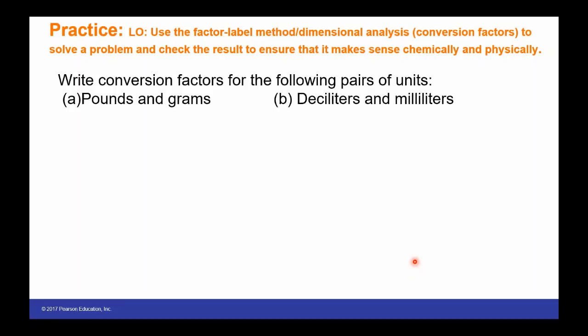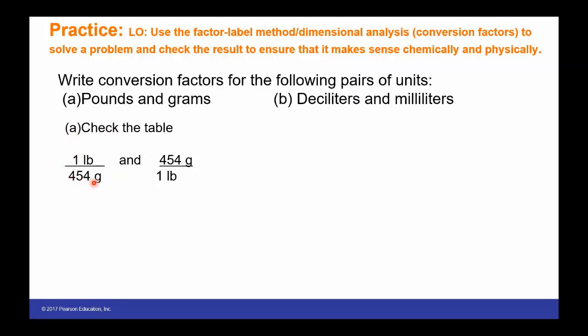Let's write a conversion factor for the following pairs of units. If we want to know the equality between pounds and grams, we look at a table. The table tells us that one pound is equal to 454 grams. We can write our conversion factor in either way: one pound over 454 grams, or 454 grams per one pound.